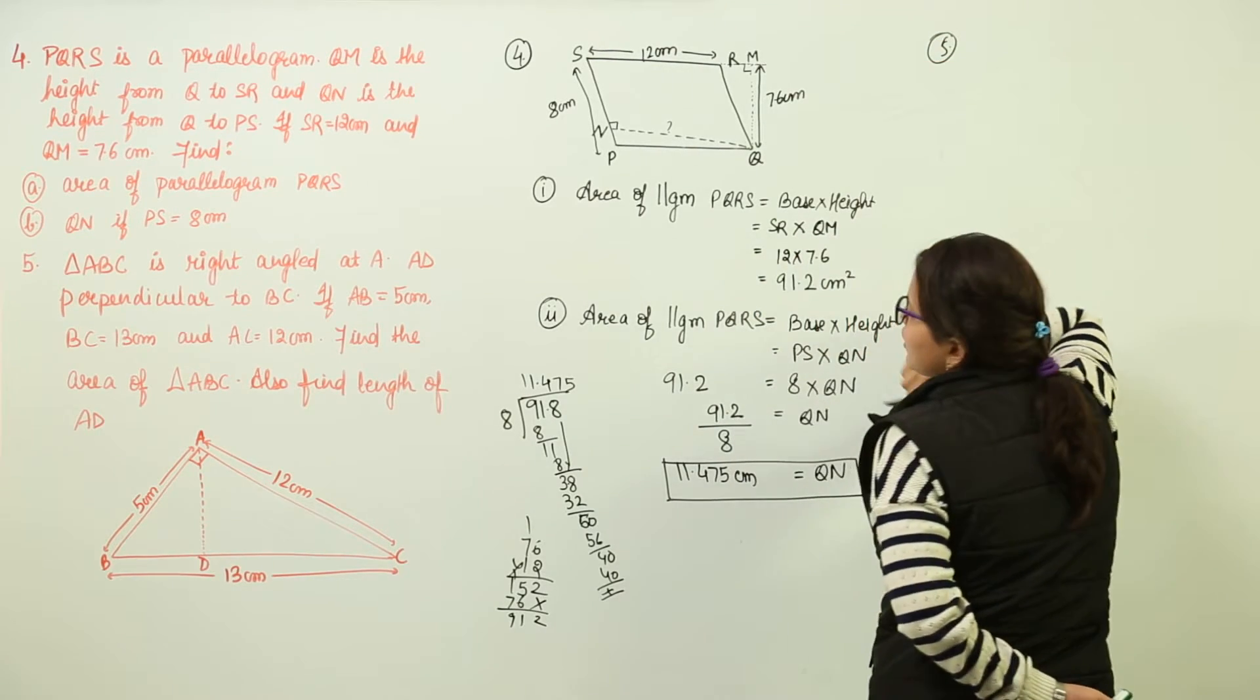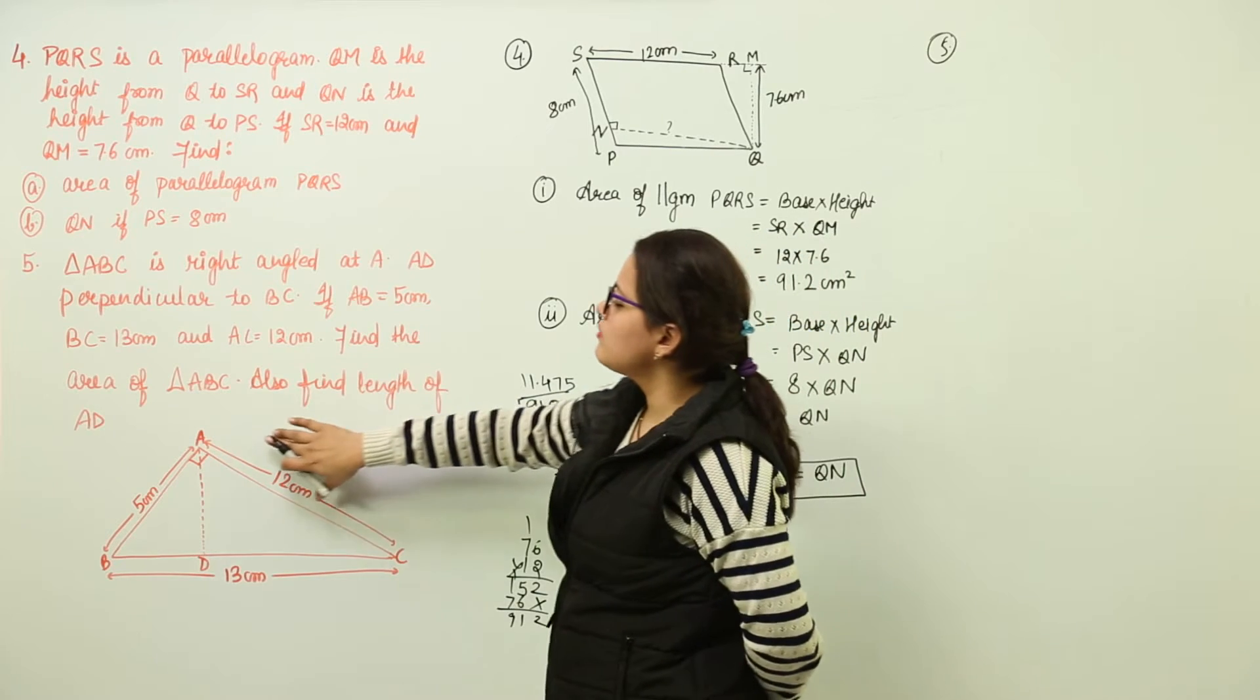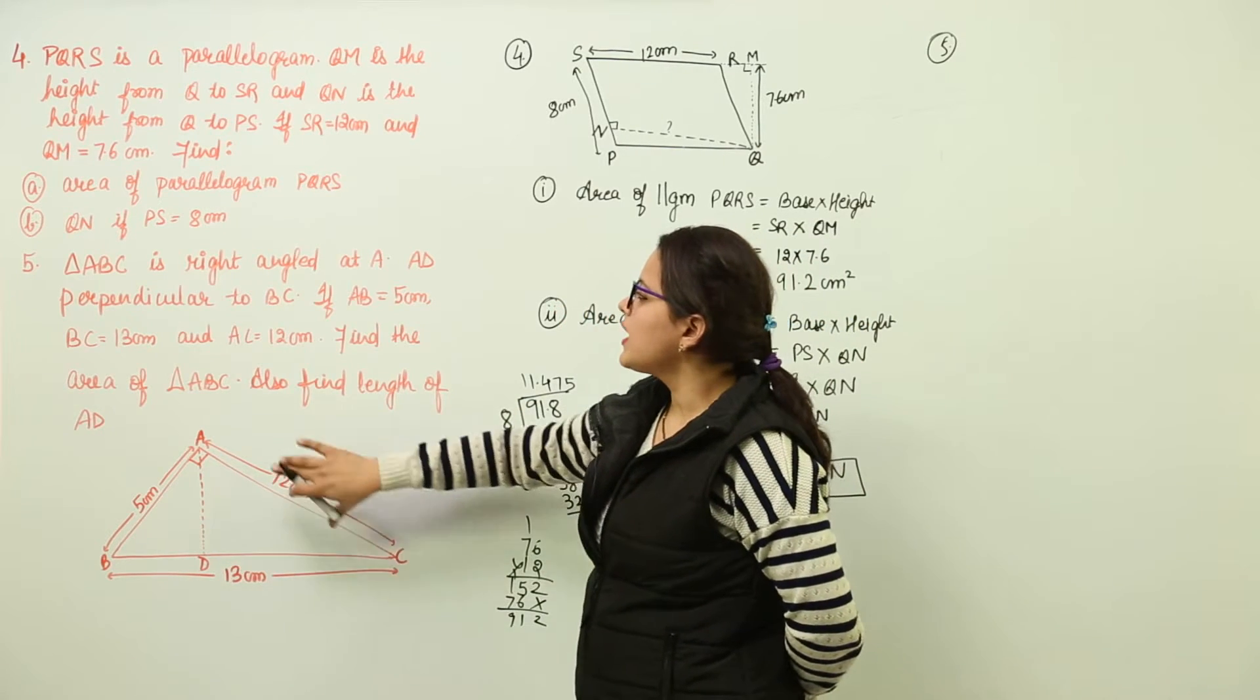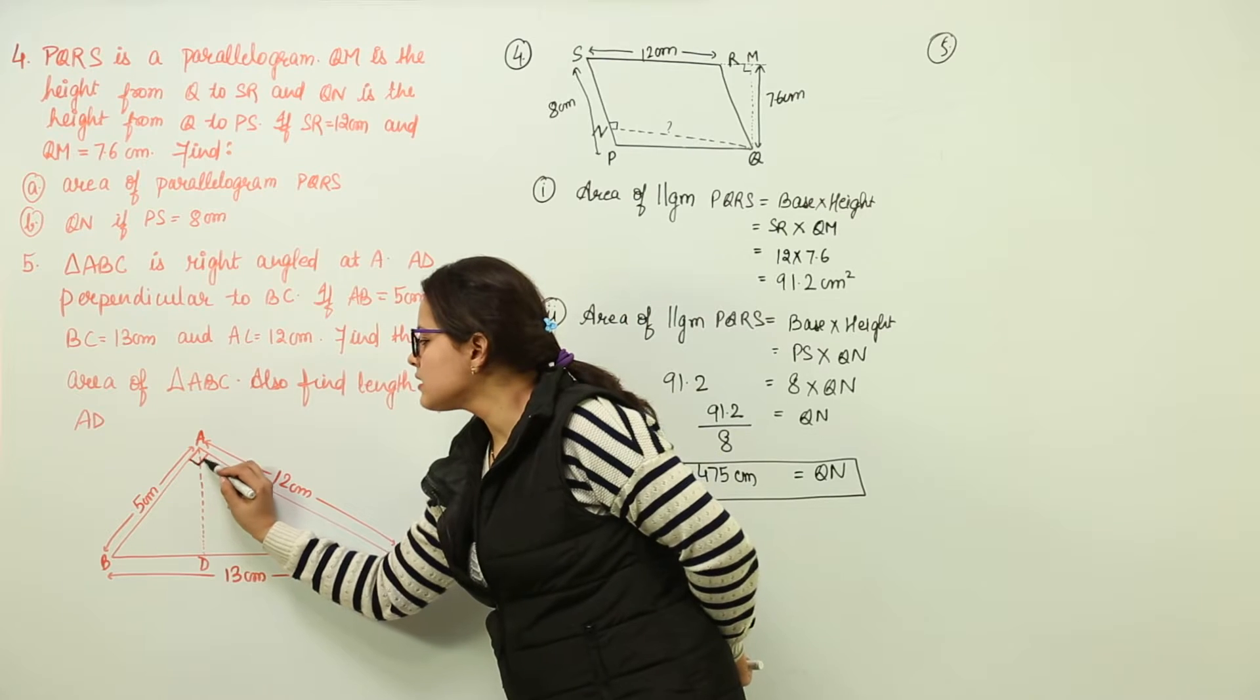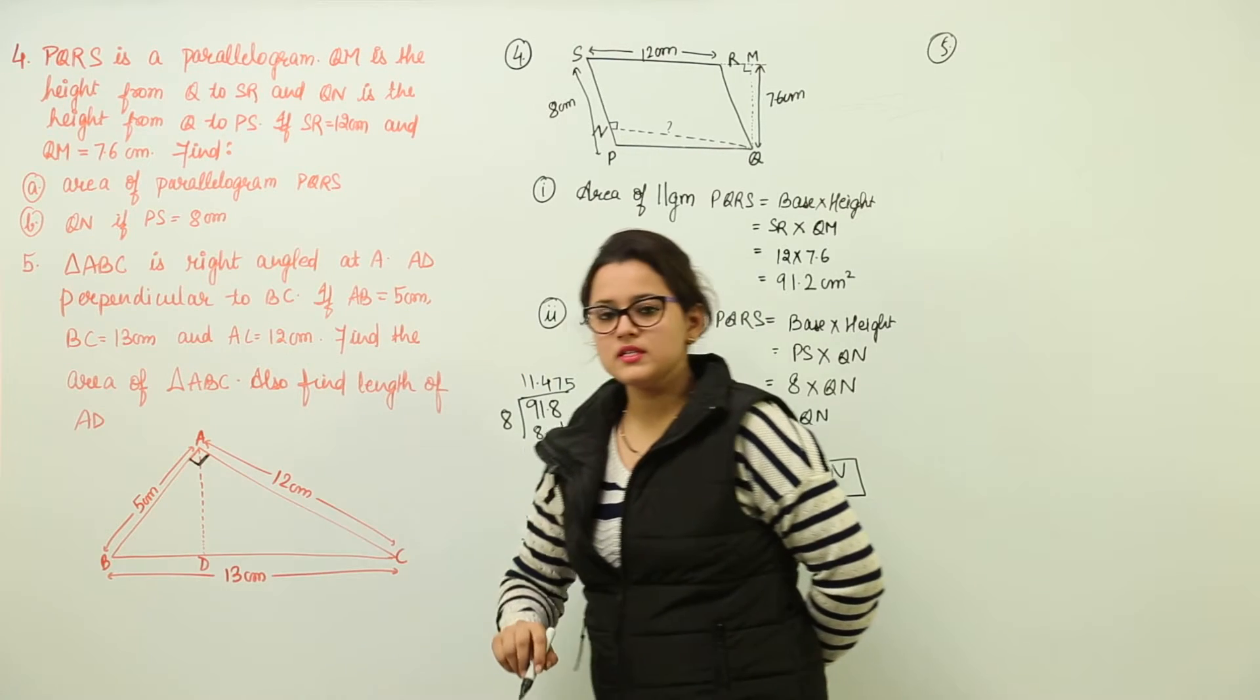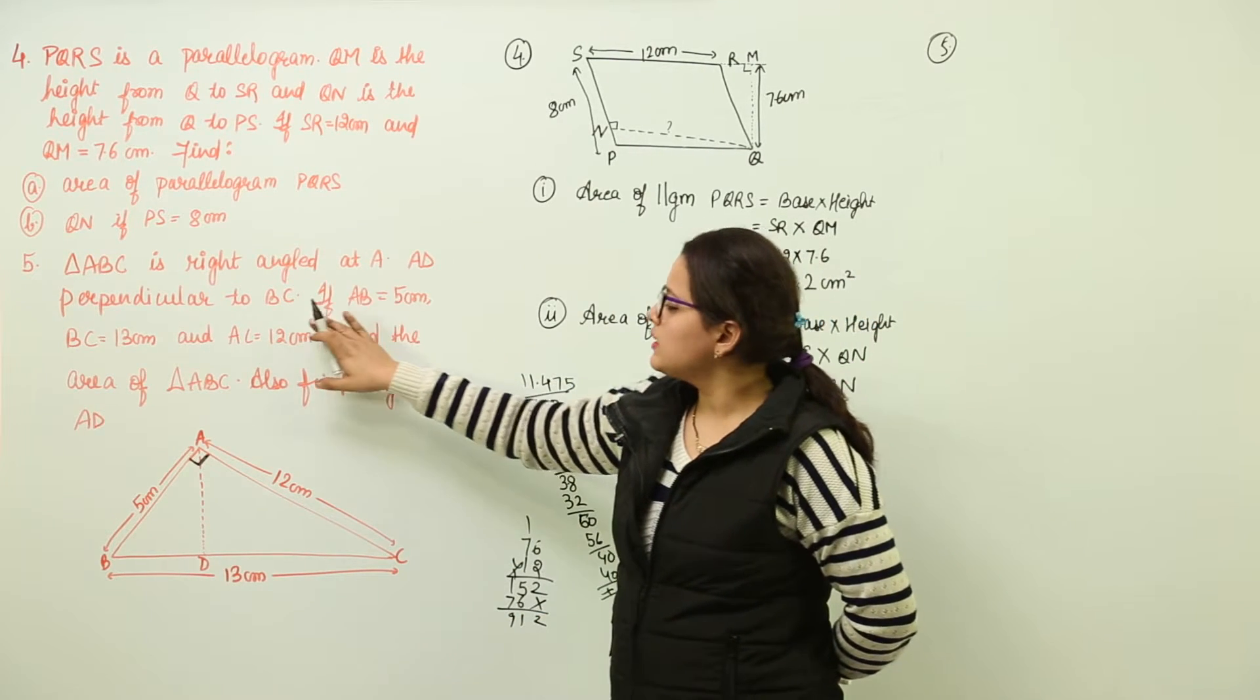That is question number 5. Question number 5 is saying you have a triangle ABC right angled at A. Means this angle is given to us as 90 degrees. AD is perpendicular to BC.